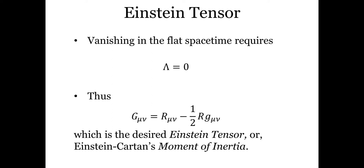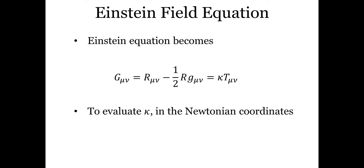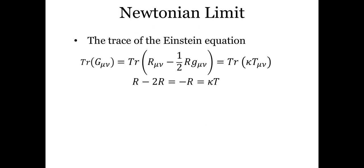The geometric significance of this tensor will be described in detail in a future video. Now that we have the familiar form of the Einstein tensor, let us write down the field equation. This is the current form of the field equation; we are yet to find the explicit form of the proportionality constant kappa. To evaluate kappa, we employ Newtonian gravity and use Newtonian coordinates. According to Newtonian gravity, the zero-zero component of the Ricci tensor equals 4π times rho, the mass-energy density, which comes straight from Newtonian theory. Taking the trace of Einstein's equation gives negative R equals kappa times the trace of T.